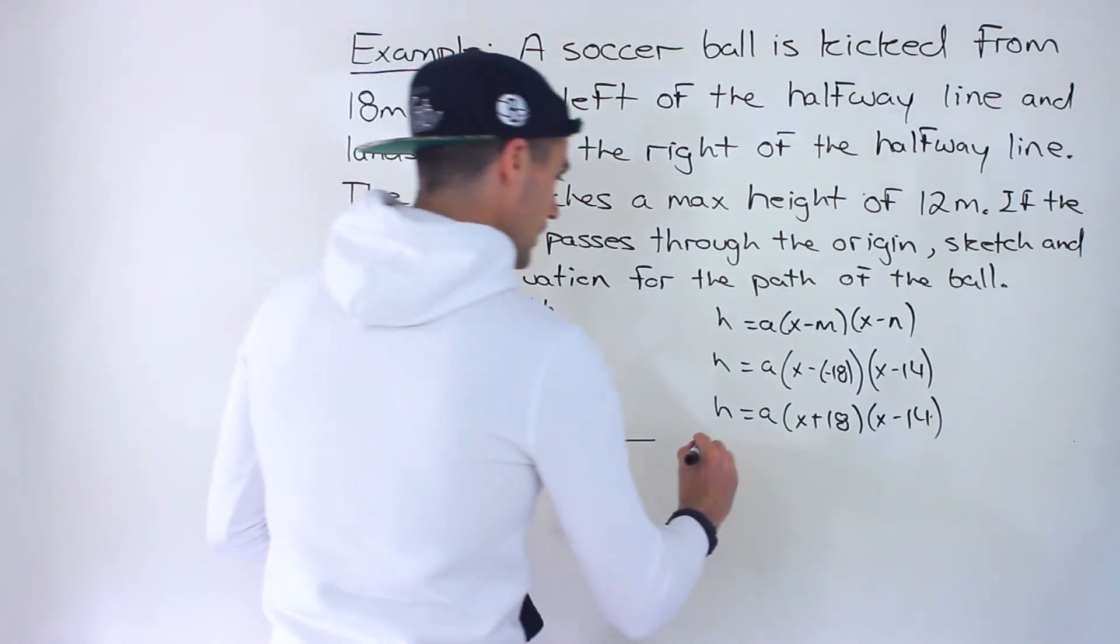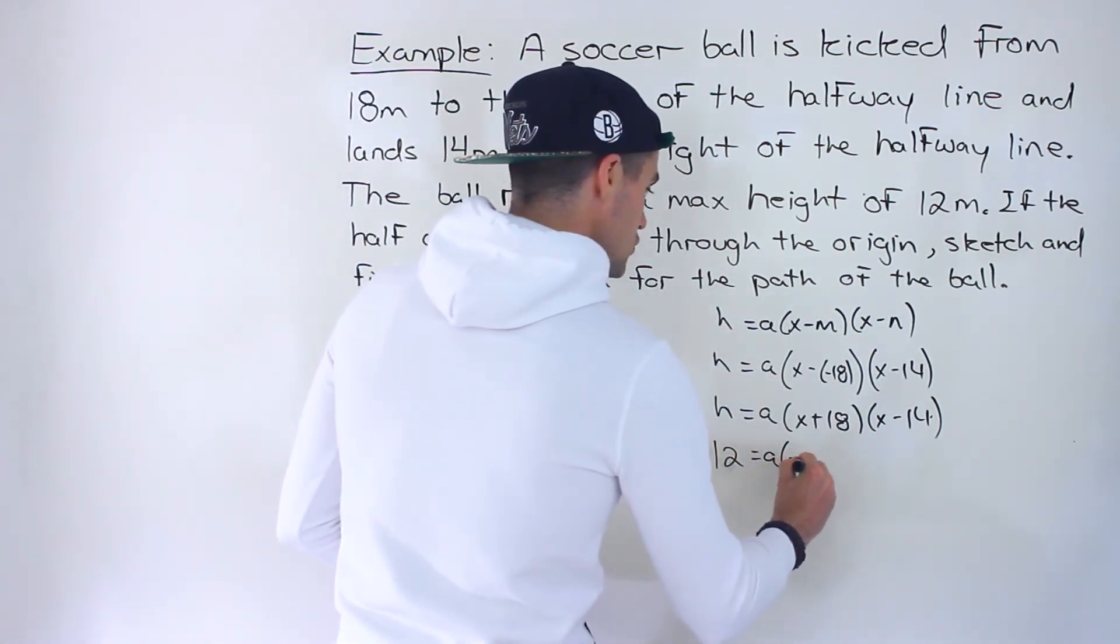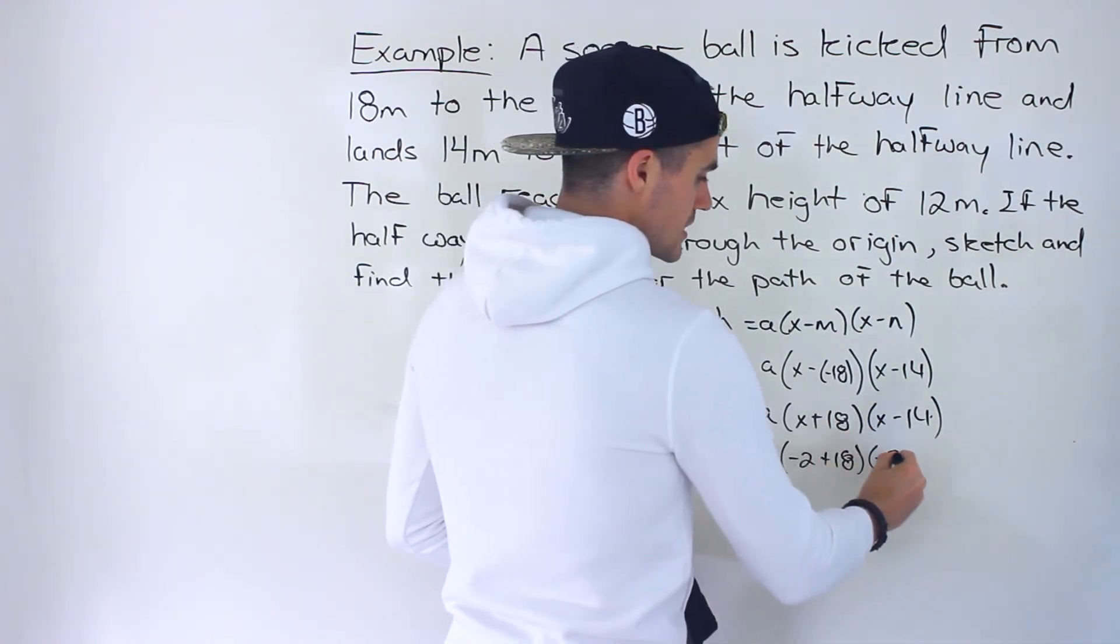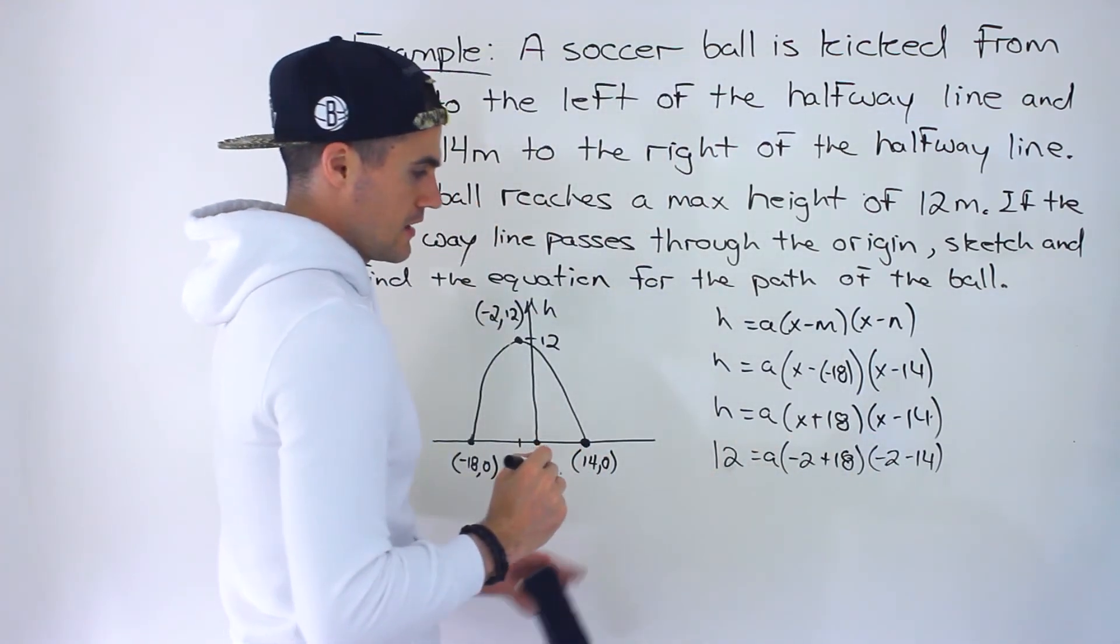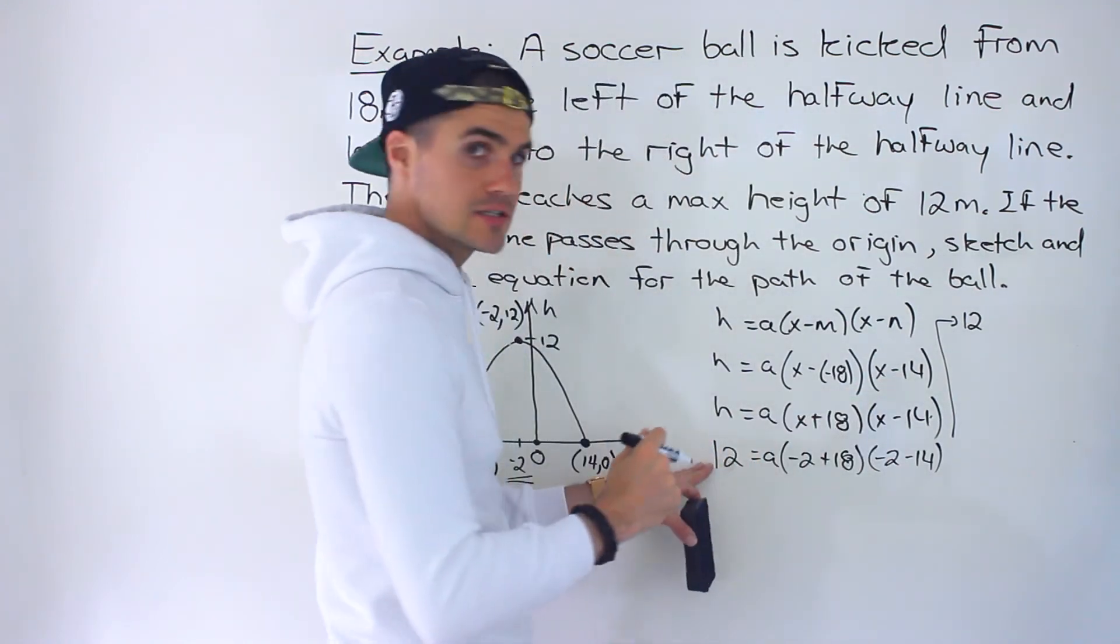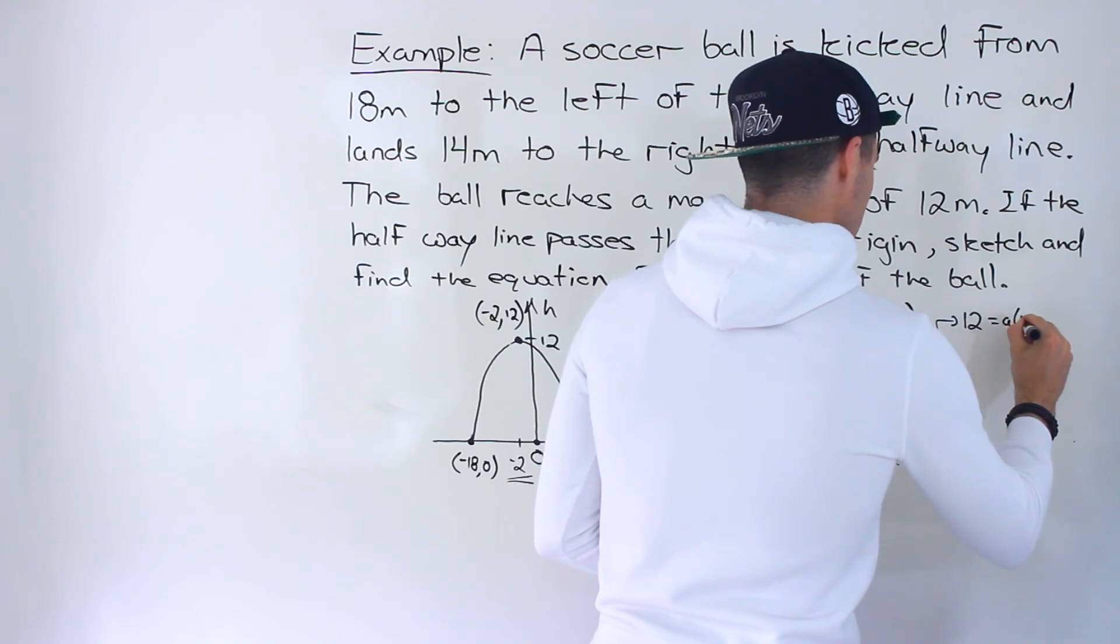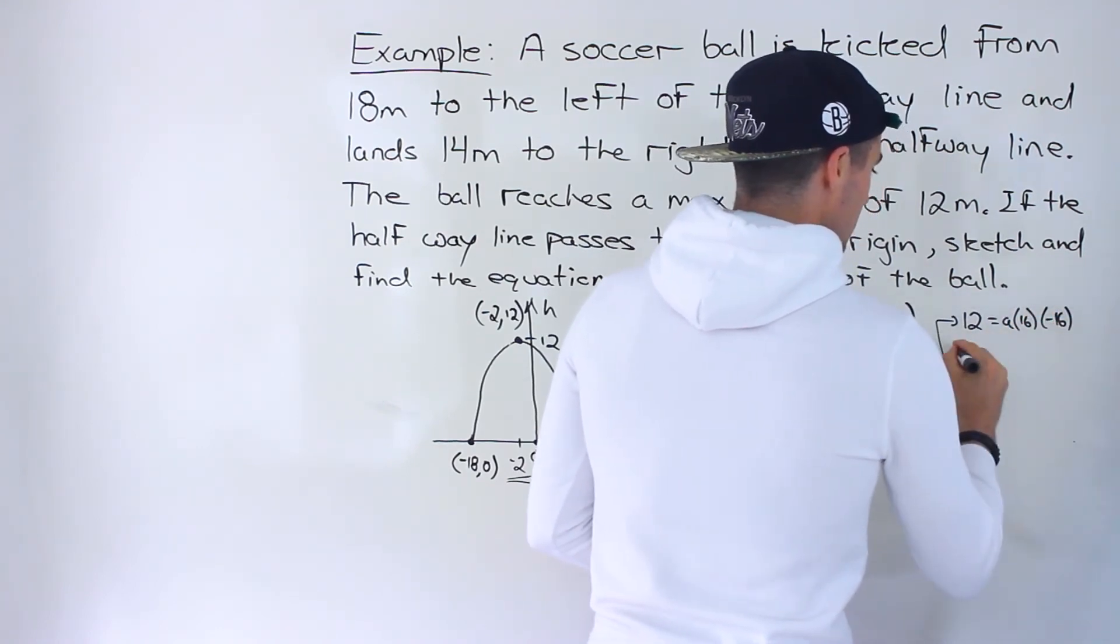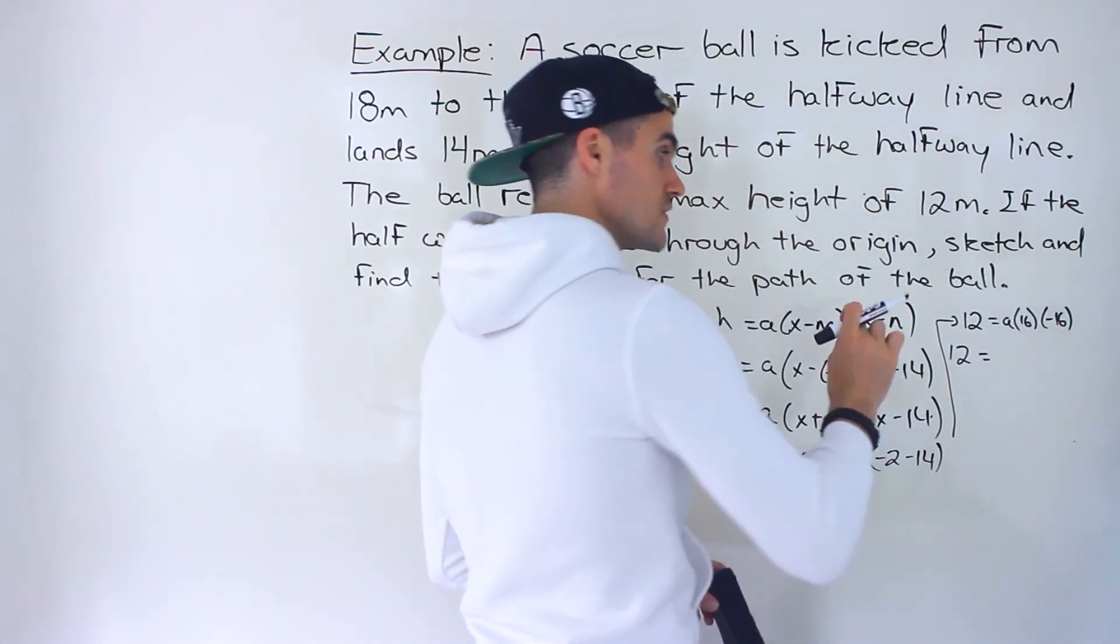So plugging in 12 for h, and then we will plug in negative 2 for x. We'll have negative 2 plus 18 times negative 2 minus 14. Continuing, the 12 remains on the left side. Then we got the a, negative 2 plus 18 would give us positive 16, negative 2 minus 14 will give us negative 16.